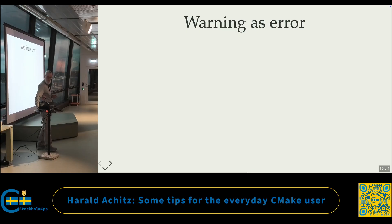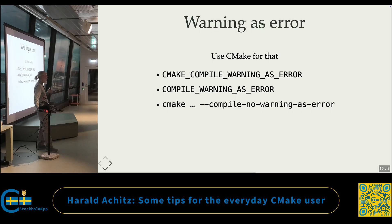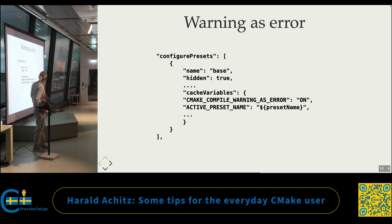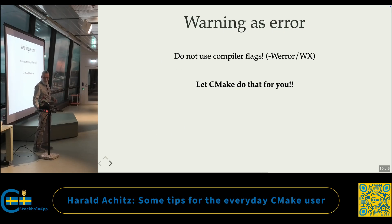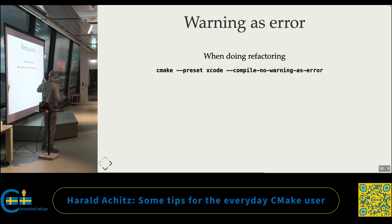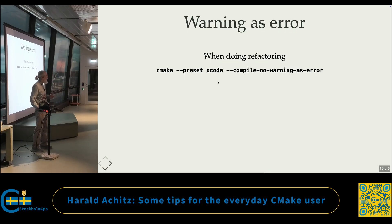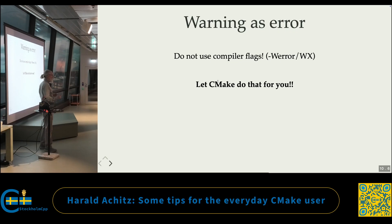Warnings as errors. Use CMake for this — don't set your compiler flags manually. CMake has built-in stuff. You can set in your code how warnings should be treated, and it has a command line toggle for the configuration phase. I put this default in my base preset so the default is warnings-as-errors. When I do a refactoring and change things, I configure with compile warnings-as-errors off, and then I don't get the unused variable noise or whatever annoyances you get during refactoring. The CI will always get the right stuff. Do not use compiler flags to set the warning stuff — use CMake, it will handle it for you.